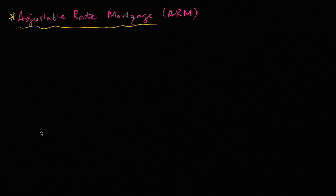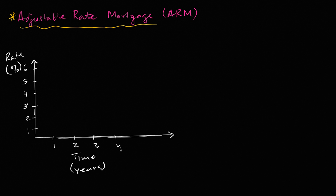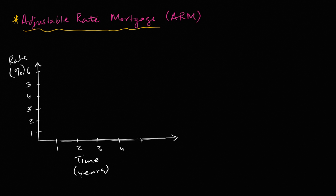So let's first think about the mechanics, and to do that, I will draw a timeline. On the vertical axis, this is going to be your rate, your interest rate in percentage terms, so that's 1%, 2%, 3%, 4%, 5%, 6%, and it could go higher than that. And here, this is the time axis in years: one year, two years, three years, four years, five years, and maybe we'll go six years out.